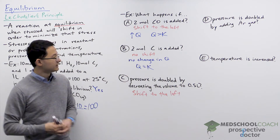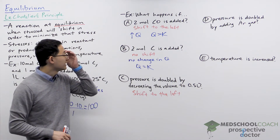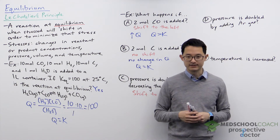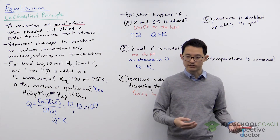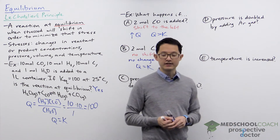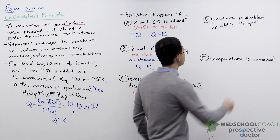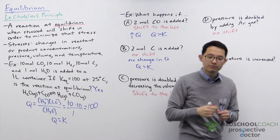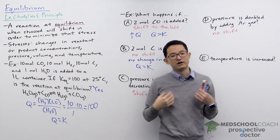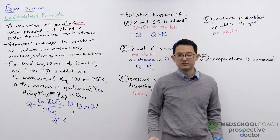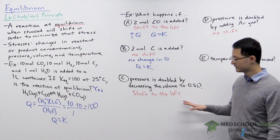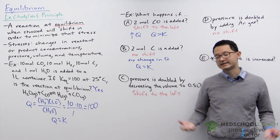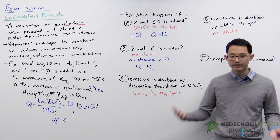However, let's take a look at another situation: we double the pressure by adding argon gas to the system. Again, we're increasing the pressure, but in this situation, when you increase the pressure by adding argon gas, there is no shift. We have to be pretty careful here with Le Chatelier's principle — it's not always so simple. If there is a shift, something must have happened such that Q is no longer equal to K.